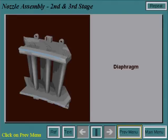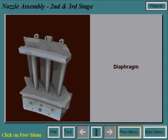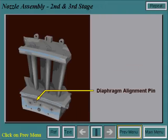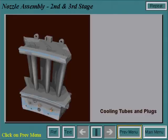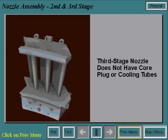The diaphragm section is then attached and a pin is installed for nozzle-to-diaphragm alignment. Wheel space cooling tubes and plugs are installed in the diaphragm. The third stage nozzle is similar to the second stage nozzle, but it is not forced air cooled, so there is no core plug and there are no cooling tubes.